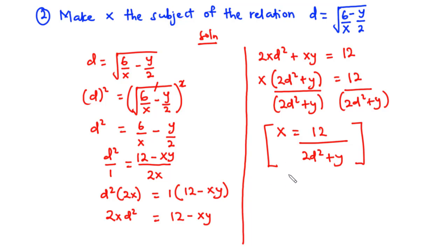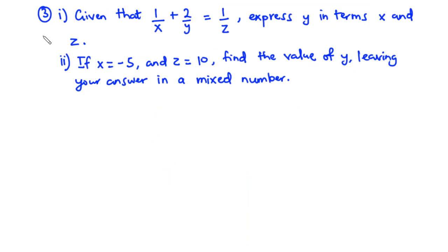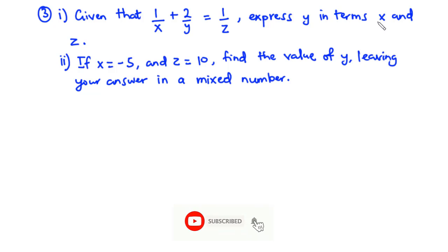So that's how to make x the subject of the relation d equals the square root of 6 over x minus y over 2. Now for example three, part i: given that 1 over x plus 2 over y equals 1 over z, express y in terms of x and z. Part ii: if x equals negative 5 and z equals 10, find the value of y leaving your answer as a mixed number.